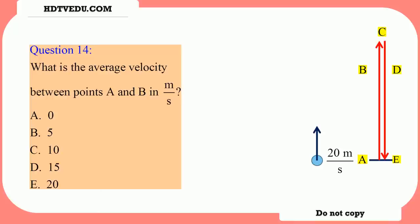What is the average velocity between points A and B in meters per second? Is it A: 0, B: 5, C: 10, D: 15, or E: 20? Don't forget the units — it's meters per second. 20 meters per second is the speed at point A.